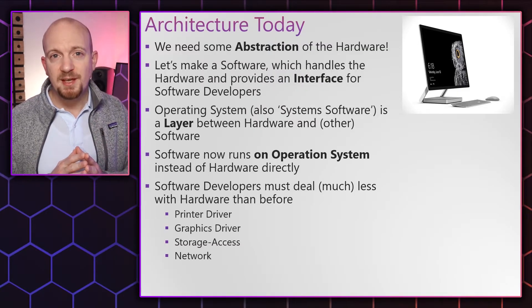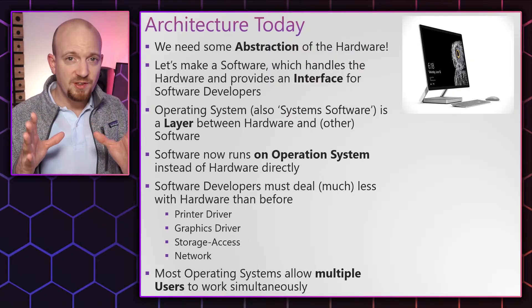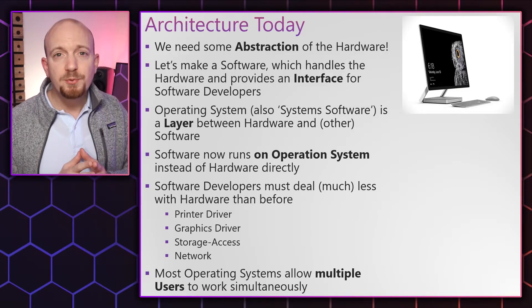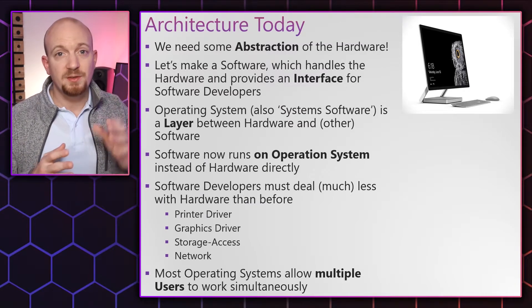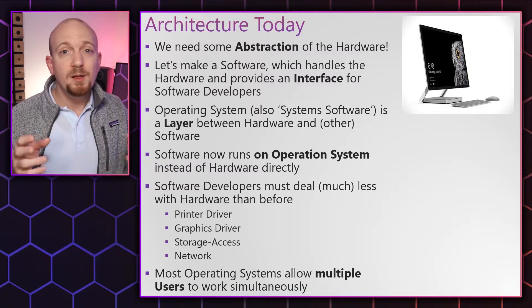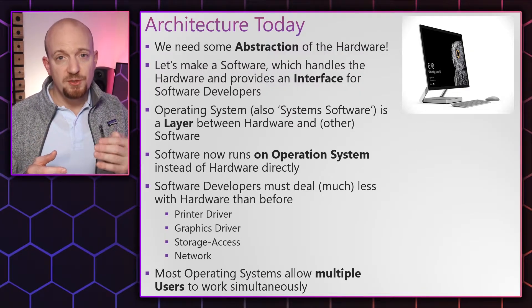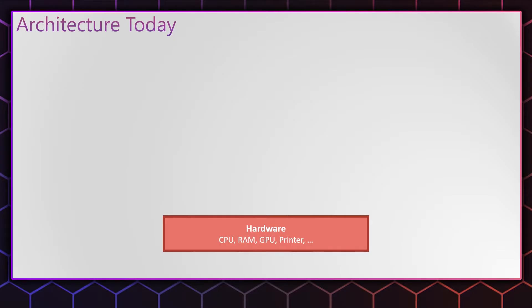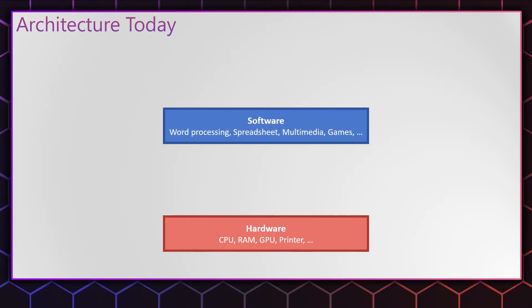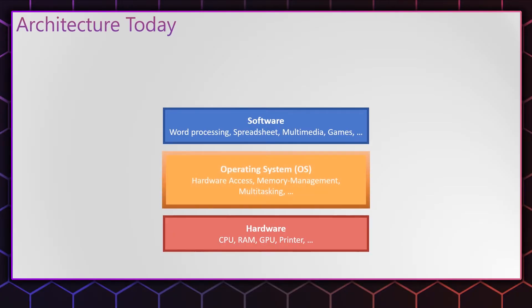Most operating systems nowadays allow multiple users to run simultaneously. For example, if you're working on your Windows 10 computer and your partner needs to use it, you can switch user, your partner can continue working, and your work remains available in the background. A modern architecture diagram shows the hardware layer at the bottom, the software — word processing, spreadsheets, multimedia, games — on top, and the operating system in the middle, handling hardware access, memory management, and multi-tasking.